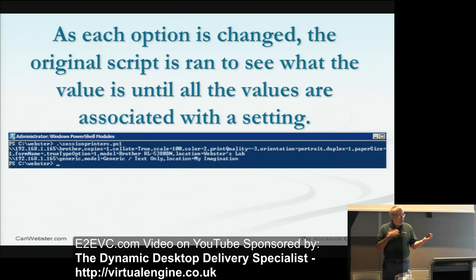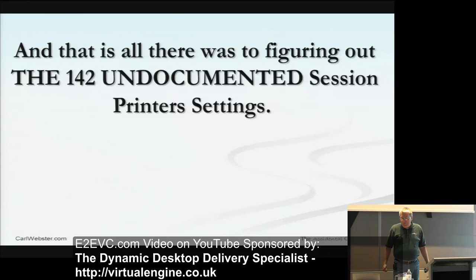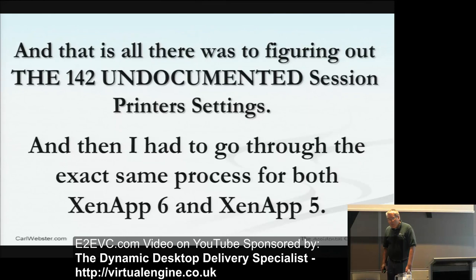I had to go through the exact same process for both XenApp 6 and XenApp 5. I figured XenApp 6 and XenApp 6.5 use the same Citrix.GroupPolicy.Commands module, so I copied all the stuff from the 6.5 script, put it in XenApp 6, ran it — barf everywhere. I had to redo all the XenApp 6. Then I said okay, XenApp 6 and XenApp 5 have the same session printer stuff, copied it over — barf. Nope. Had to figure it all over again because Citrix didn't document any of that.